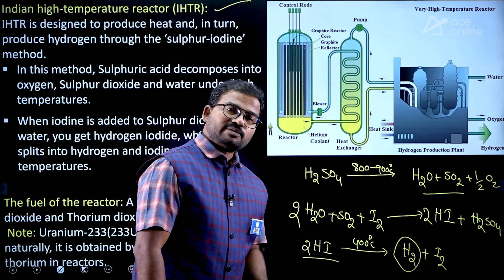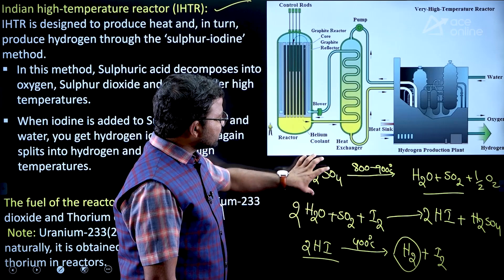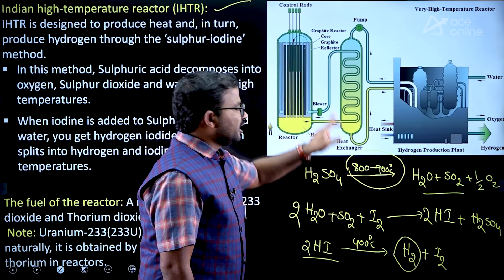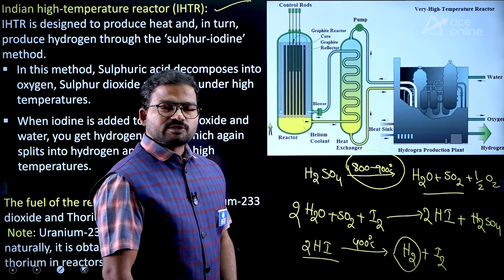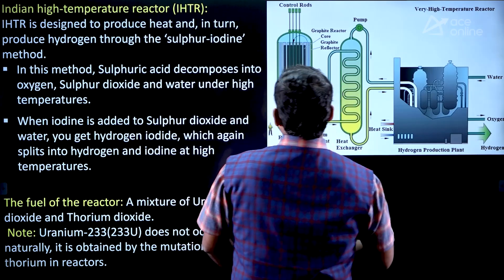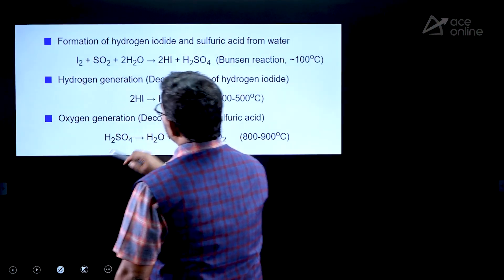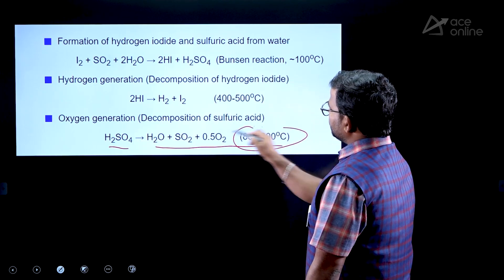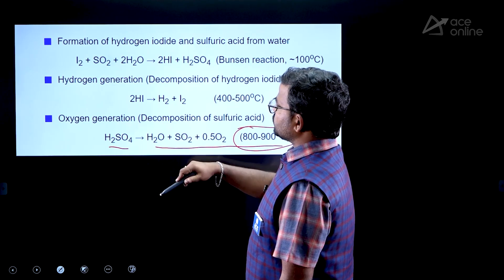So this hydrogen production uses the sulfuric acid dissociation process driven by high temperature. The sulfur-iodine thermochemical method uses heat from the reactors at 800 to 900 degrees centigrade to dissociate sulfuric acid, and this drives the overall hydrogen production cycle.